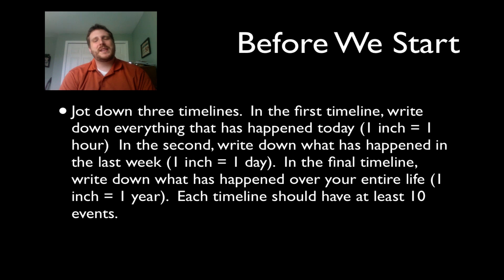Then in the second timeline, I want you to write down what has happened in the last week. So each inch is going to equal one day. And in the final timeline, you're going to write down what has happened over your entire life, what's happened throughout your whole life. So each inch again is going to equal about one year this time. And that's going to be again, at least 10 events on each of those timelines. And then go ahead and pause the video right now and just do that real quick.